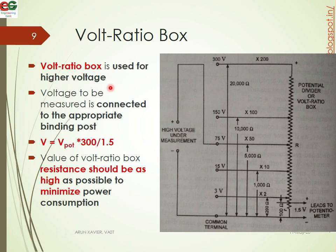Next is the Voltage Ratio Box. The Voltage Ratio Box is used for higher voltages. The voltage to be measured is connected to the appropriate binding post. The resistance value of the Voltage Ratio Box should be as high as possible to minimize power consumption. Suppose the voltage under measurement is 75 volts — we use the corresponding binding post.